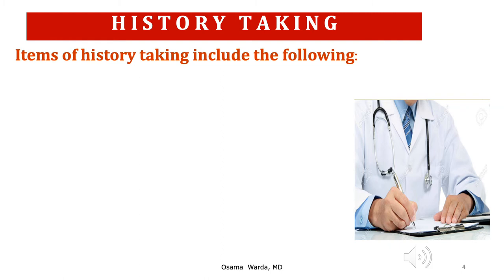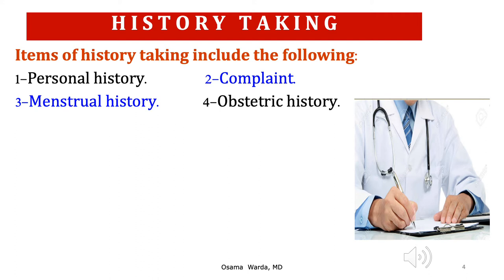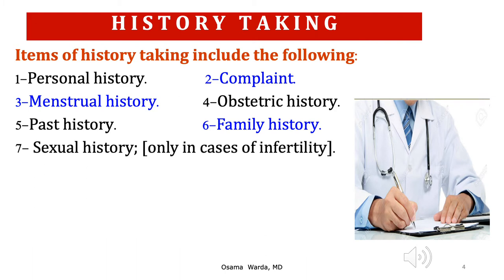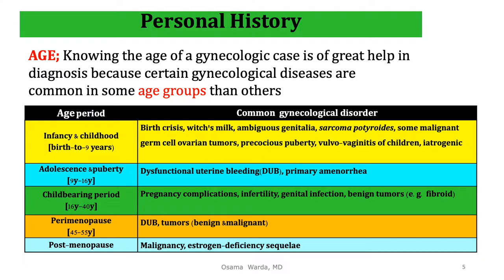History taking in gynecology includes the following components: personal history, the complaint, menstrual history, obstetric history, past history, family history, sexual history in cases of infertility, and lastly the present history. The first item in personal history is the patient's name, which should always be taken and the patient called by her name.